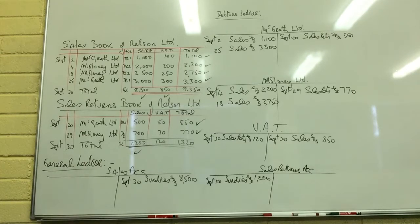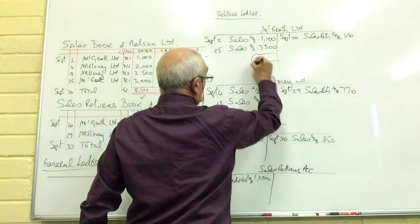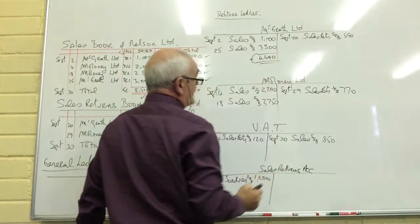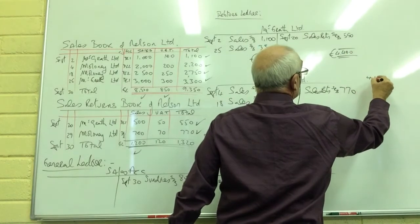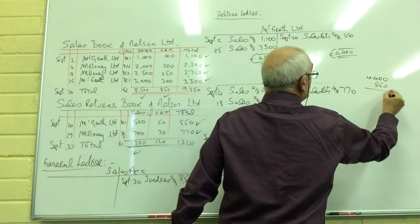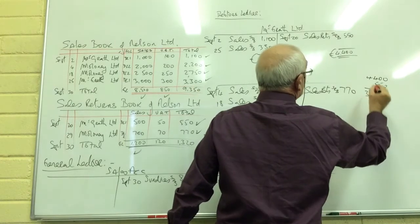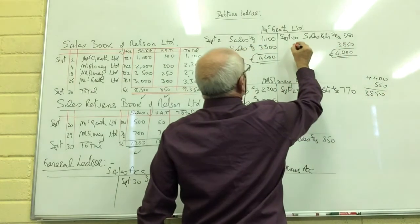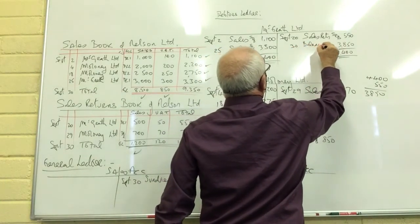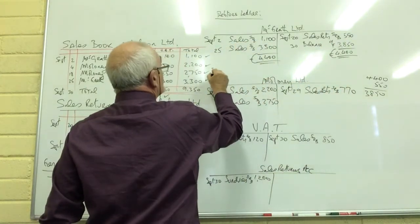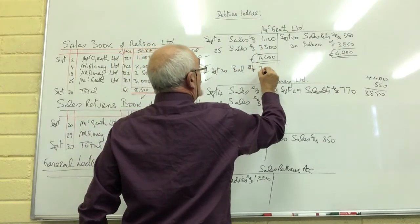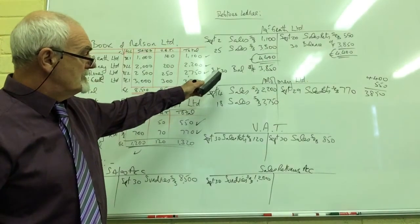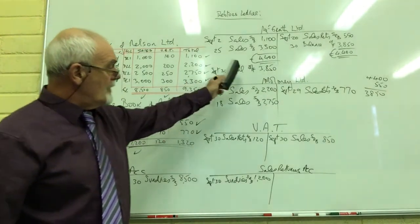All that remains is to balance McGrath and Maloney's accounts. Looking at McGrath's account, you find the difference between the two sides and put that difference into the smaller side. That's £4,400 less £550, which is £3,850. So on September 30th the balance to be carried forward is £3,850. McGrath has a debit balance brought forward of £3,850 — that's why they're called debtors, they usually have debit balances.